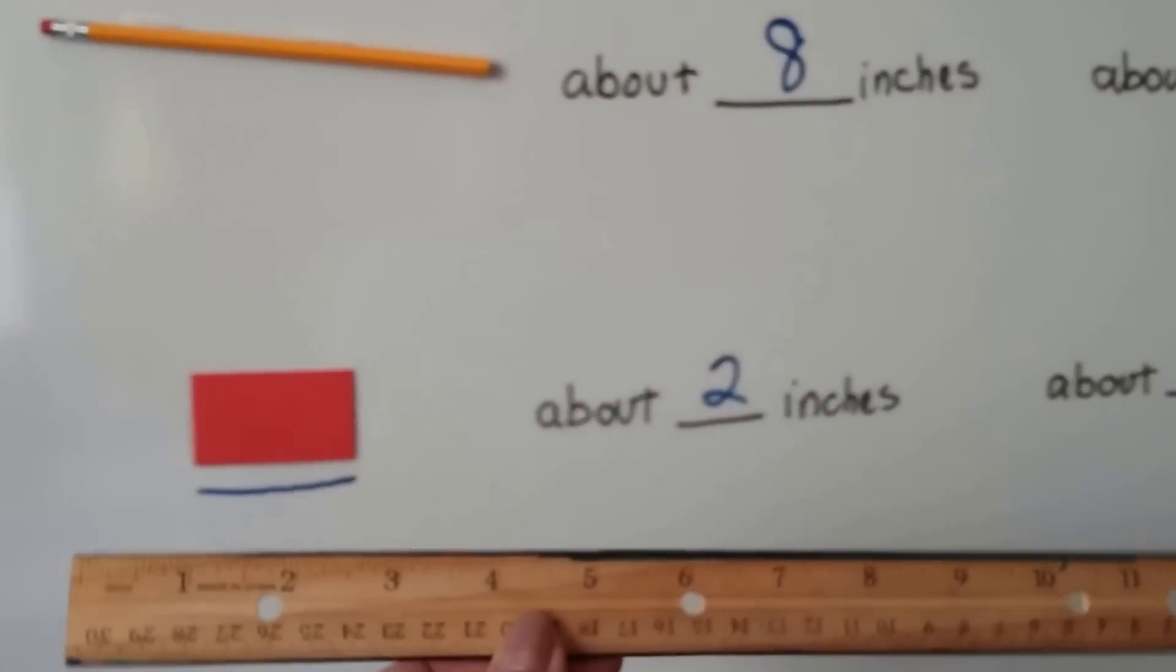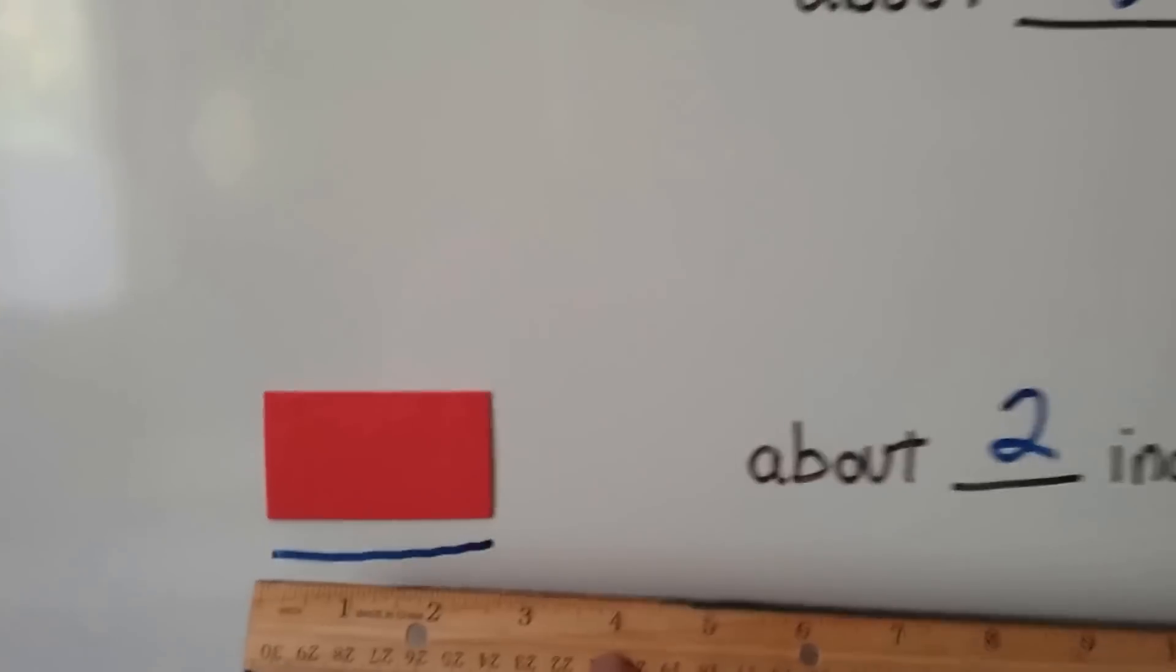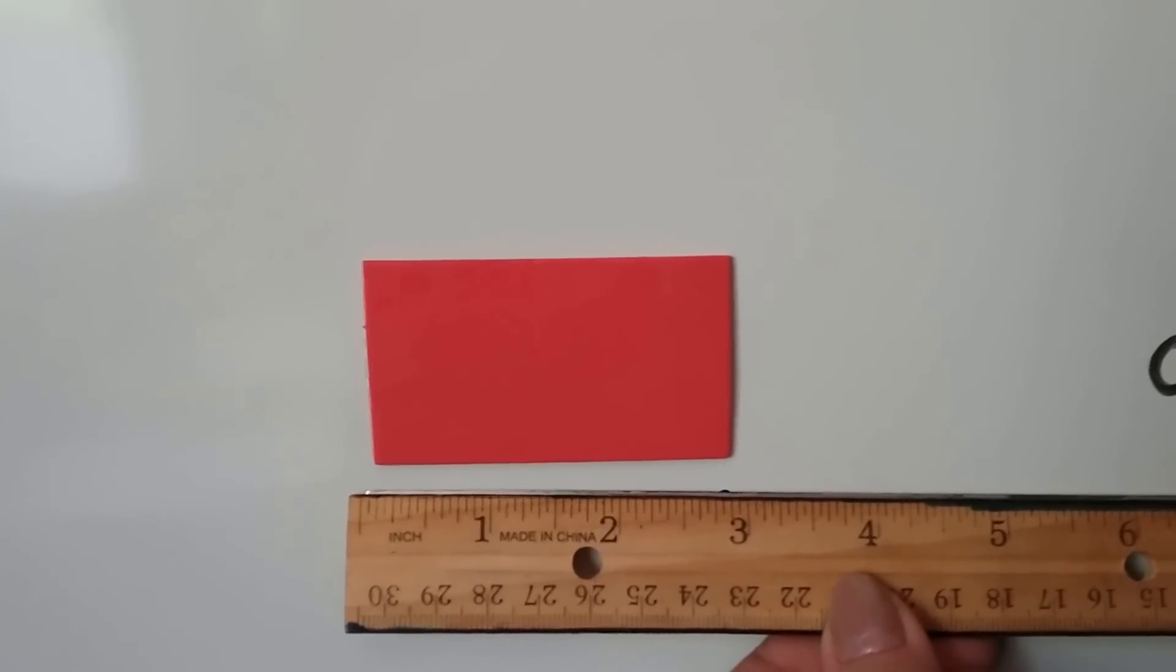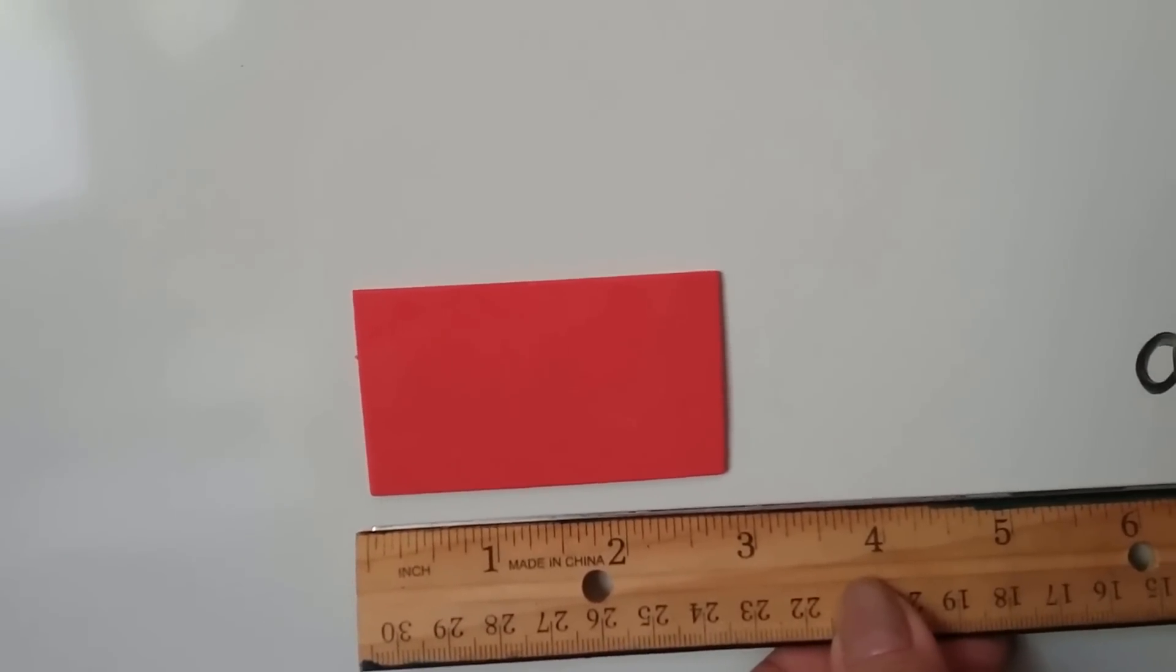You may have guessed differently. Now, we're going to take the ruler and we're going to actually measure it and put the amount there. Oh, look. I should have said 3. See how the end of the rectangle ends at 3? So, it is about 3 inches.